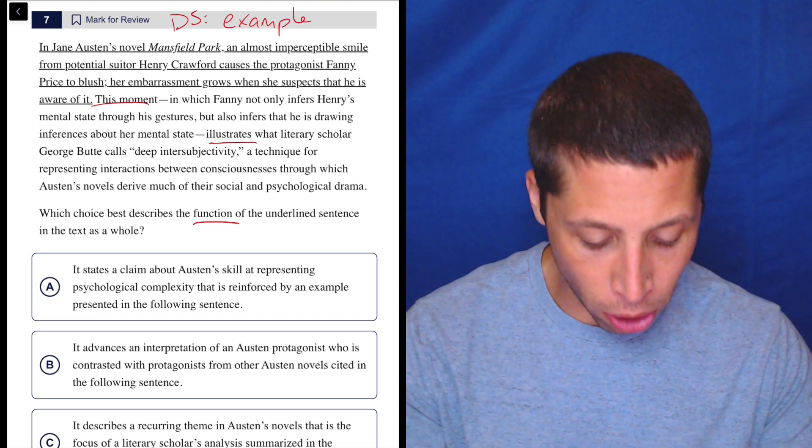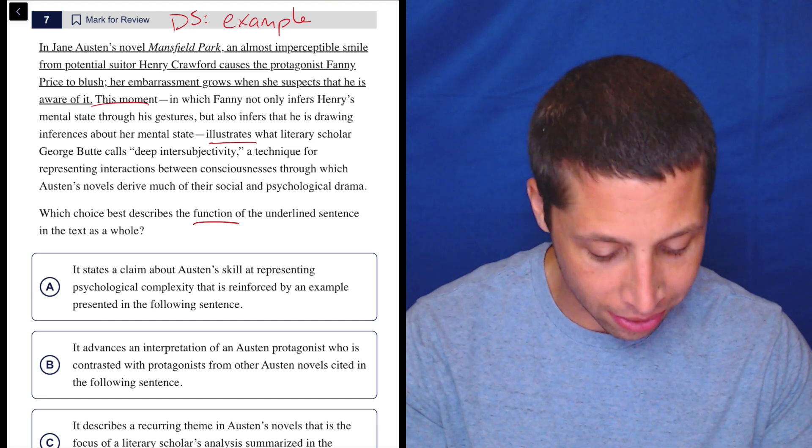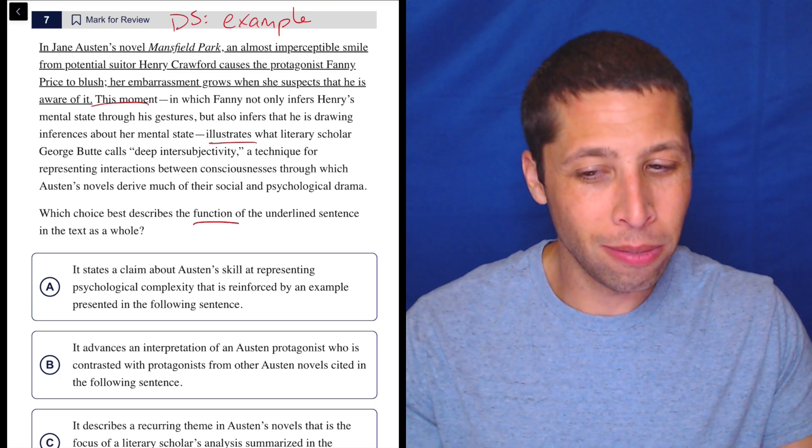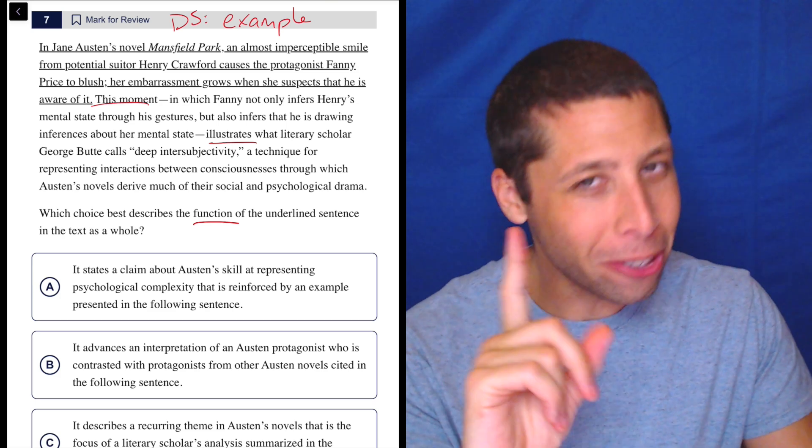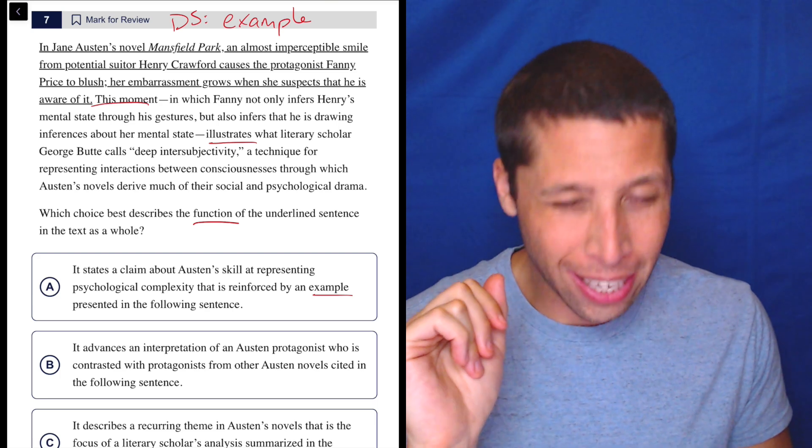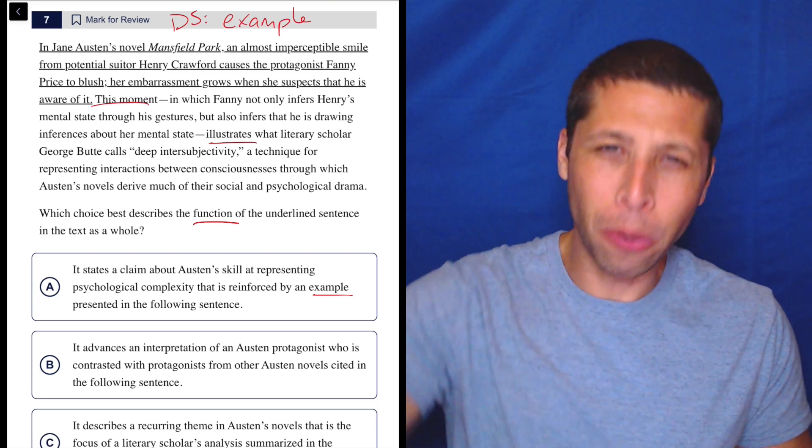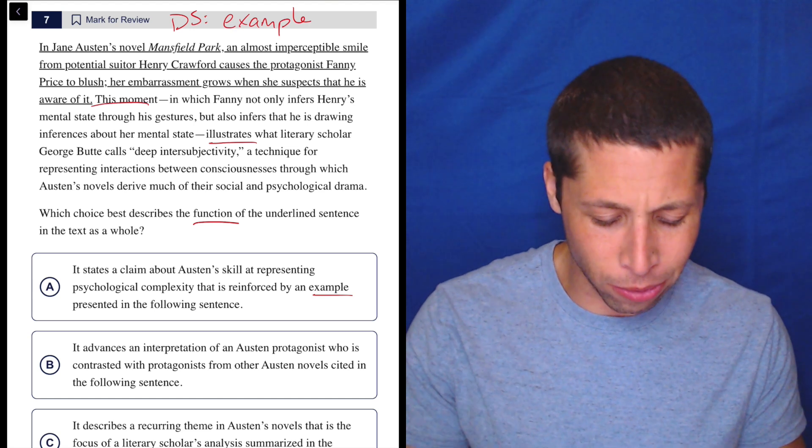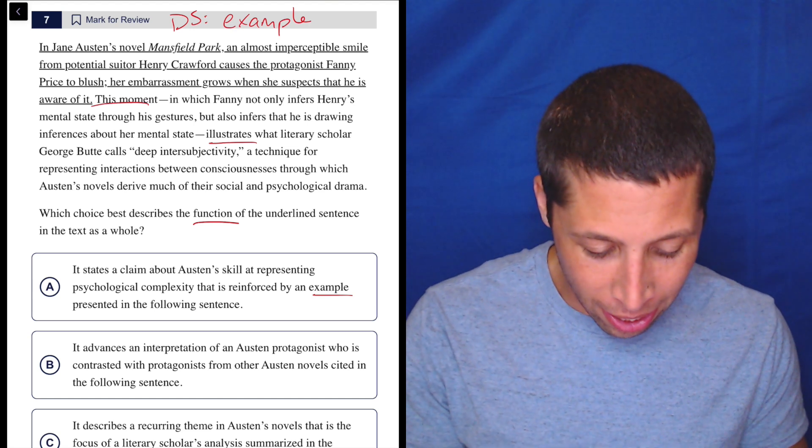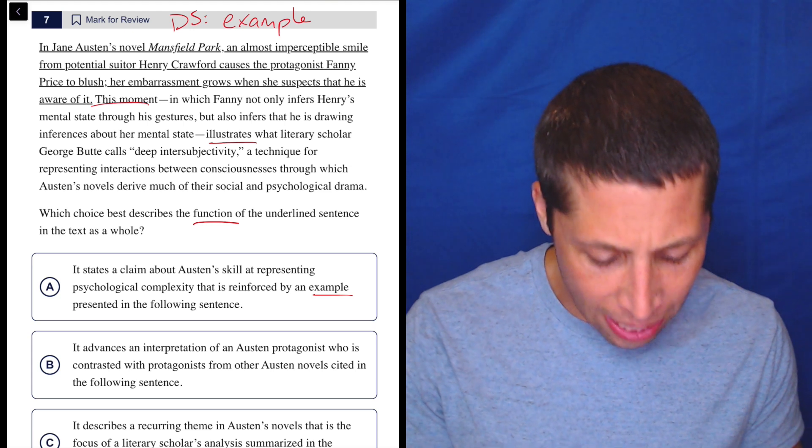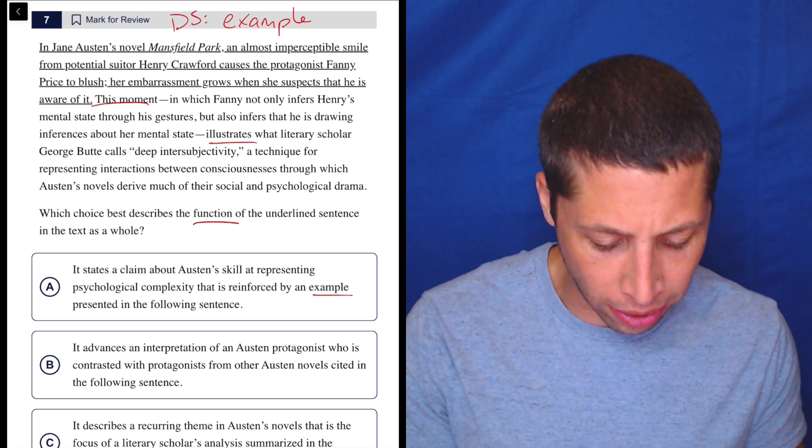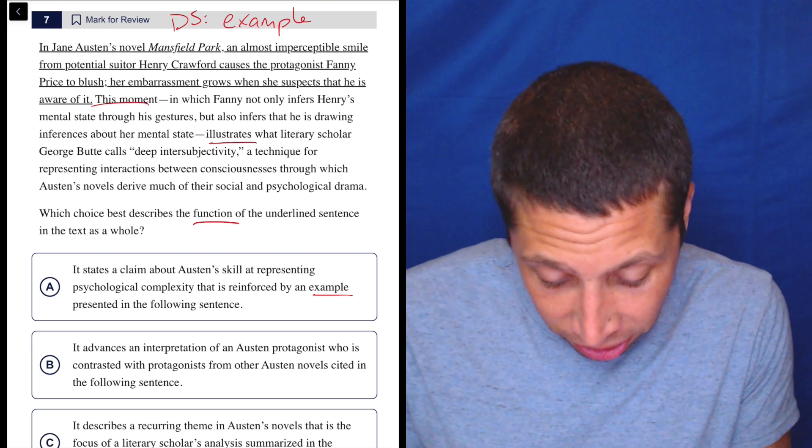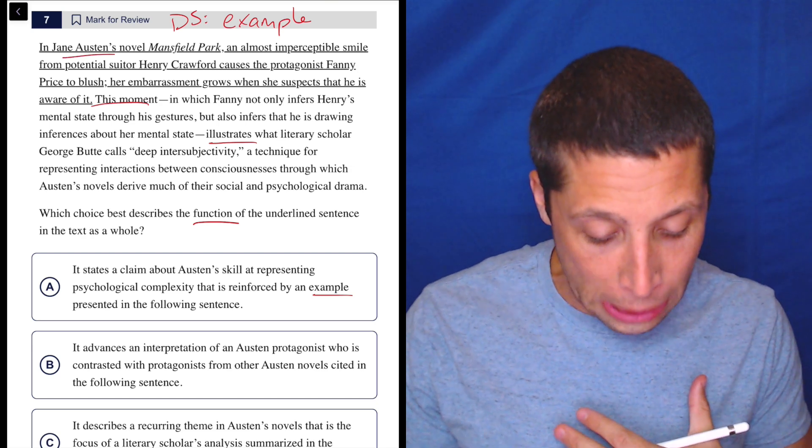It states a claim about Austen's skill at representing psychological complexity that is reinforced by an example presented in the following sentence. I don't think that's right. I mean, it uses the word example, so it's a little bit of a trap. But the example is the underlined portion and then what it's an example of comes later. So I think it's got it backwards. And I don't think it's really stating a claim about Austen's skill at representing psychological complexity. It doesn't really say - it just says it's Jane Austen's novel. It doesn't say that this is something that's particularly good.